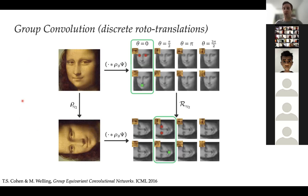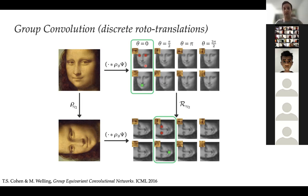We'll begin with group convolution in the simplest case: discrete rotations and translations — integer translations and rotations by multiples of 90 degrees. In many image recognition problems you'll want equivariance to translations and also rotations. In a convolution, we take a filter and slide it over the image. Here we have an eye filter and a mouth detector, and as we slide them over the image we get a strong response where the eyes are. That's the translational convolution we're familiar with from the previous lecture.